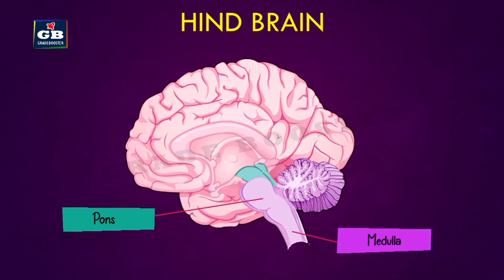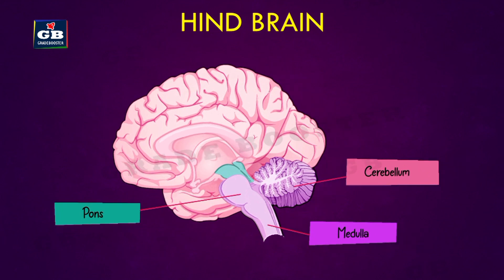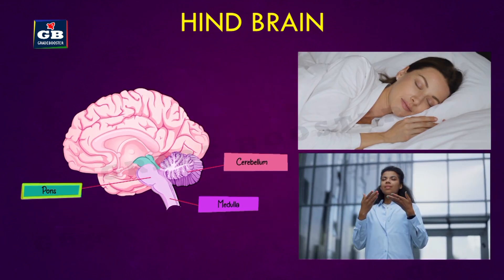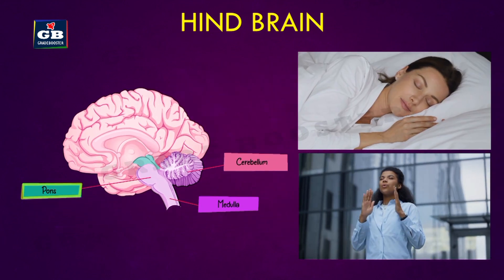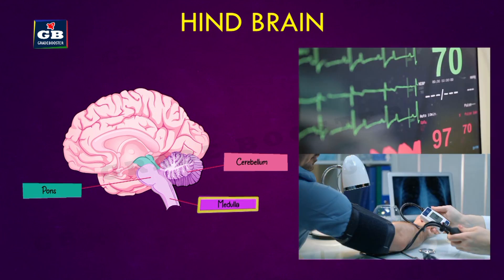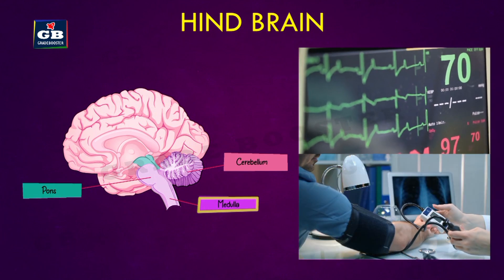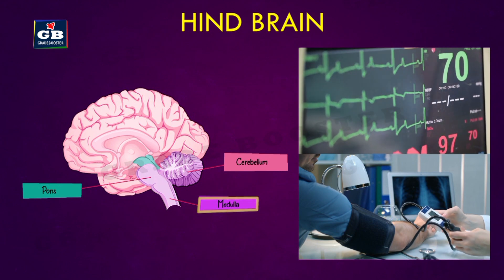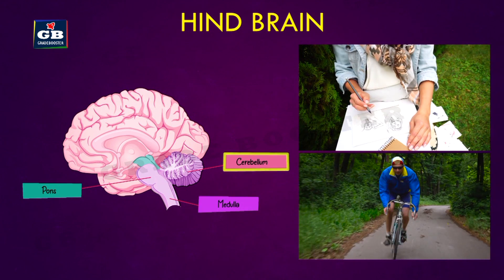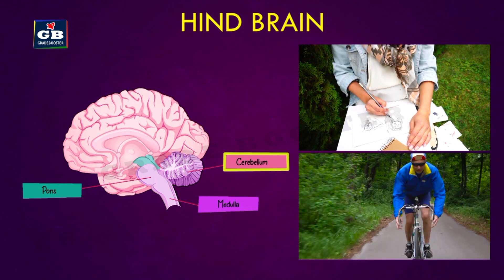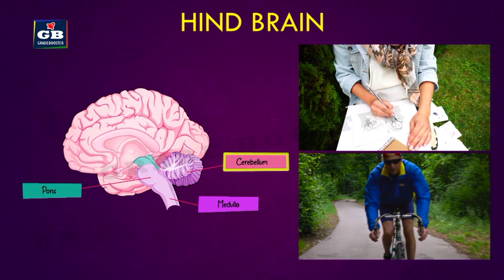The hindbrain has three parts: the pons, medulla oblongata, and cerebellum. These parts control the involuntary functions of our body. The pons controls our sleep and wake cycle and breathing. The medulla controls heart rate, breathing, blood pressure, and more involuntary functions.